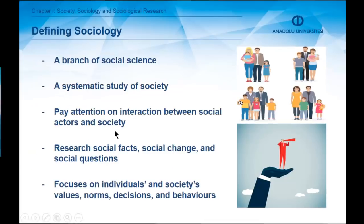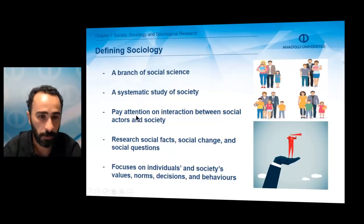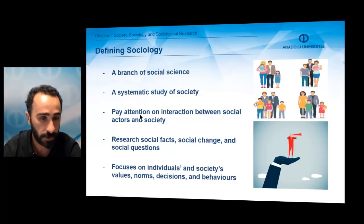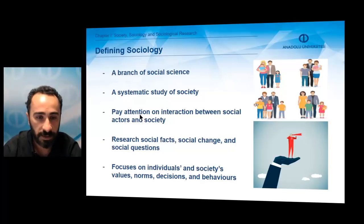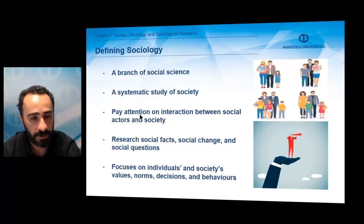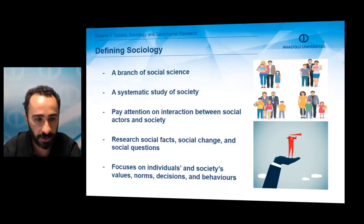Such an emphasis on sociology inevitably leads us to clarify what sociologists mean when they talk about society. Society can be considered as a totality of the mutual relationships and interactions among people who have gathered together, who share a specific territory and culture as well as common social institutions. Main types of societies can be signified as hunting and gathering societies, pastoral societies, agrarian societies, traditional states, industrial or modern societies, and post-industrial societies.